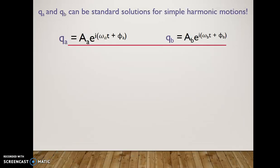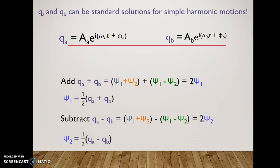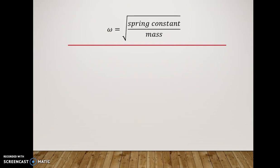Let us deal with equation 5 and 6. If we say qA and qB can be standard solutions for simple harmonic motion, then if we add our qs together and subtract them, we get two other expressions for the displacement that we can use in our solution. We also get, since omega goes the square root, the spring constant over the mass, omega A and B are as follows.